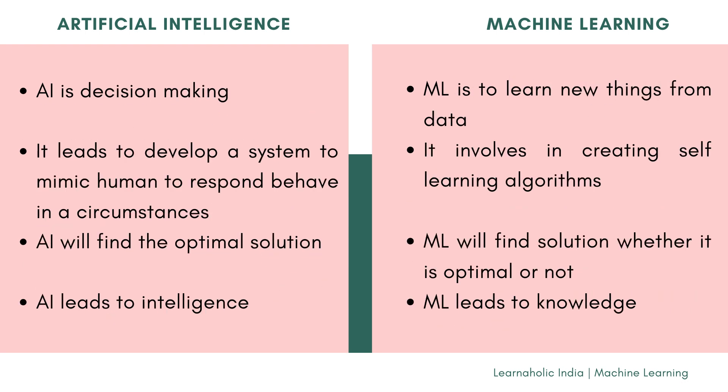Artificial Intelligence is about decision making, whereas Machine Learning allows a system to learn new things from data. Artificial Intelligence leads to developing a system to mimic humans in how they respond and behave in circumstances, whereas Machine Learning involves creating self-learning algorithms.